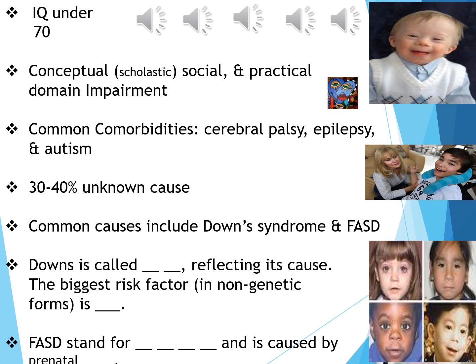The IQ score used to distinguish normal intellectual range from intellectual disability is 70. So 70 and above begins the normal IQ range; 69 and lower indicates intellectual disability. There are three major areas of impairment: conceptual — you might call that scholastic — practical, and social.